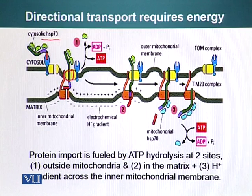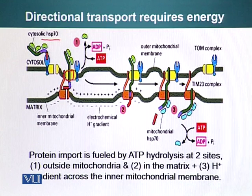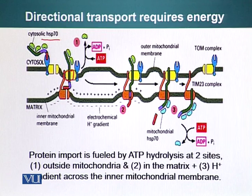When the protein has to be imported into the matrix part of mitochondria, energy is required, provided by several factors. Outside the mitochondria, heat shock proteins keep the protein in an unfolded configuration. When the protein has to cross the inner membrane, a proton gradient from the proton pumps present in the inner membrane helps drive transport.